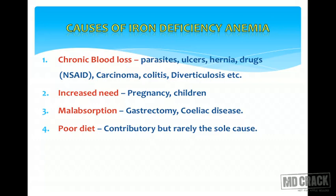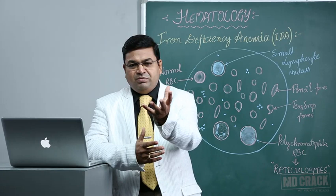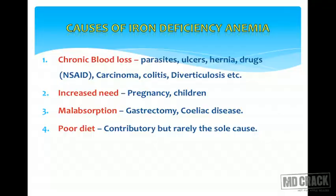Malabsorption syndromes — due to gastrectomy, jejunostomy, or celiac disease — are another cause, since gastric acidity is very important for iron absorption. Poor diet is again a very important cause in developing countries like India, where poverty, ignorance, and population explosion are all contributory factors for iron deficiency anemia.